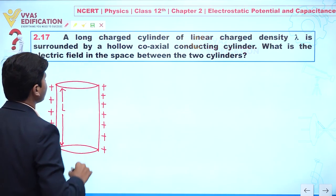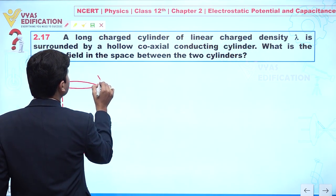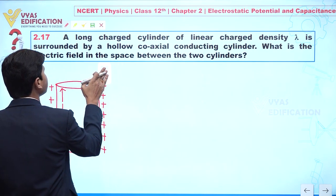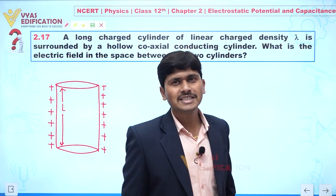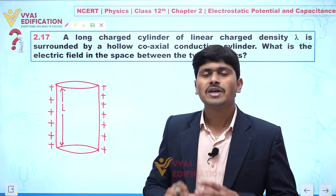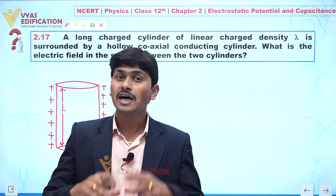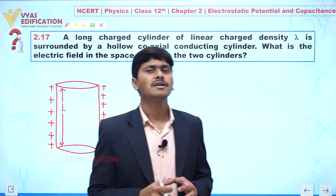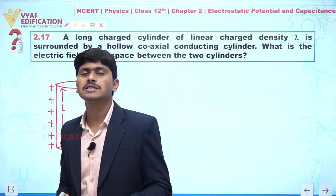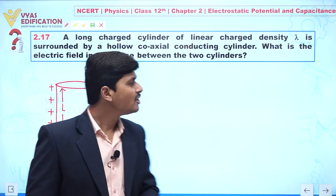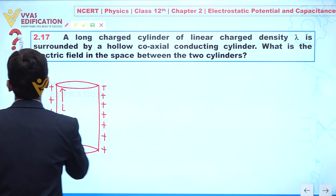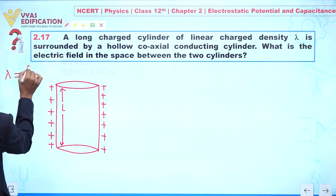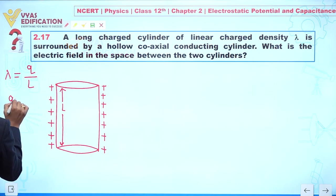The linear charge density is given as lambda. Linear charge density is defined as the charge present on a conducting body divided by its length, or charge per unit length. So lambda equals Q divided by L, which means Q is given by lambda times L.